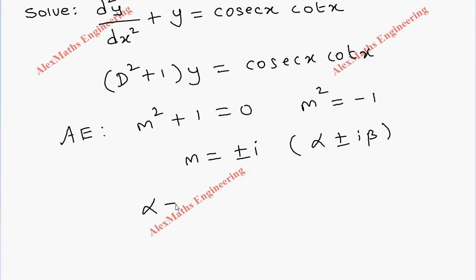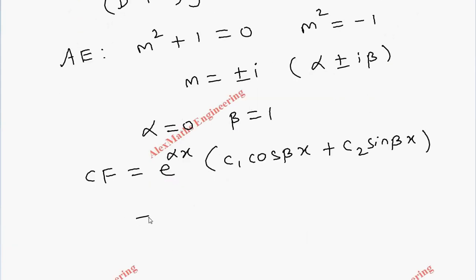Now the complementary function, by formula, is e^(αx)(c₁cos(βx) + c₂sin(βx)). Substituting the values of α and β, e^(0x) becomes 1, so we get c₁cos(x) + c₂sin(x). This is our complementary function.